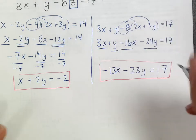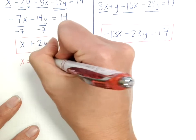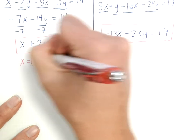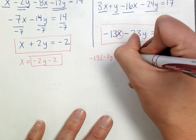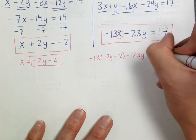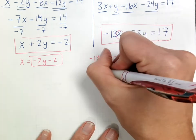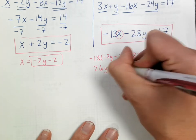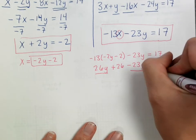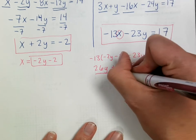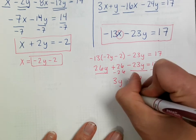Now I have two equations with just x and y. Using substitution, I get x = negative 2y minus 2. Plugging this into the second equation: negative 13(negative 2y minus 2) minus 23y = 17, giving 26y + 26 minus 23y = 17, so 3y = negative 9, meaning y = negative 3.